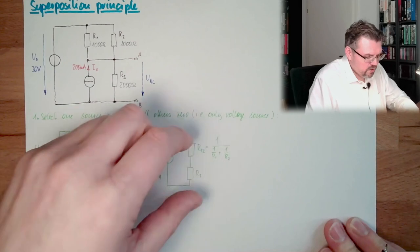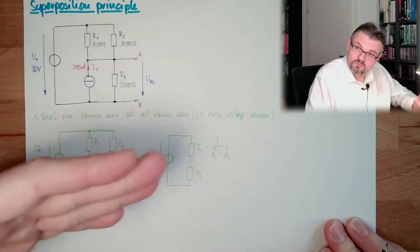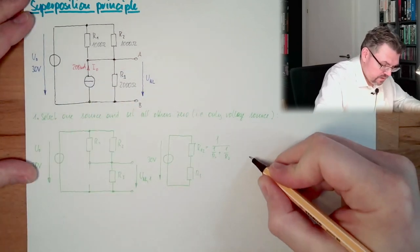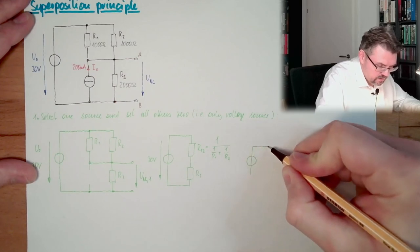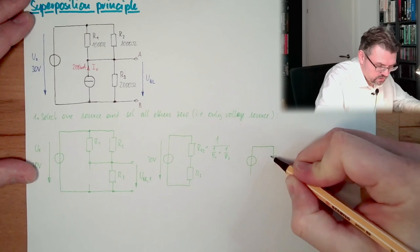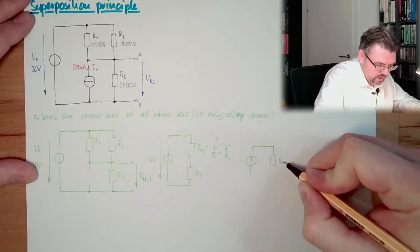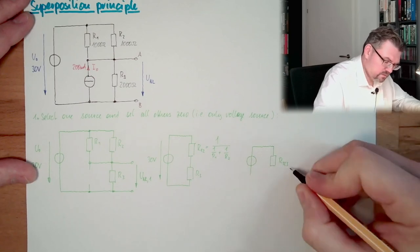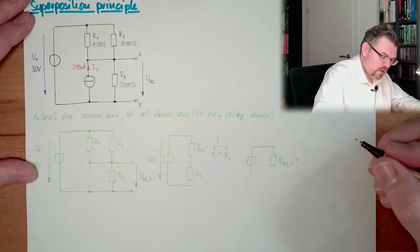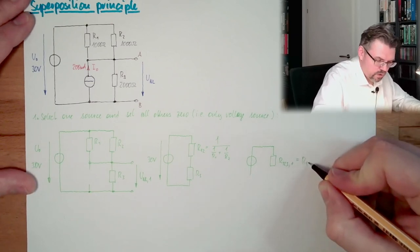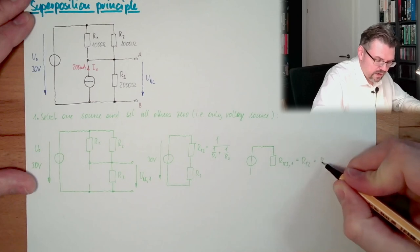And here this I can skip. So here we have only R3. And here we have 30 volts.